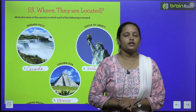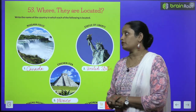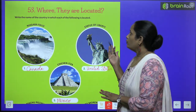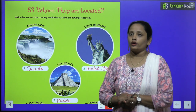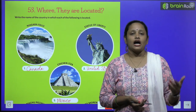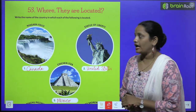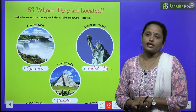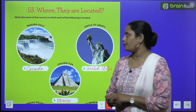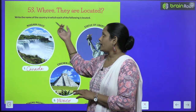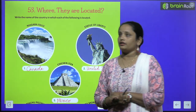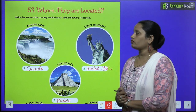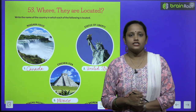Now children, the next chapter is chapter number 53 and the name is 'Where They Are Located.' Write the name of the country in which each of the following is located.